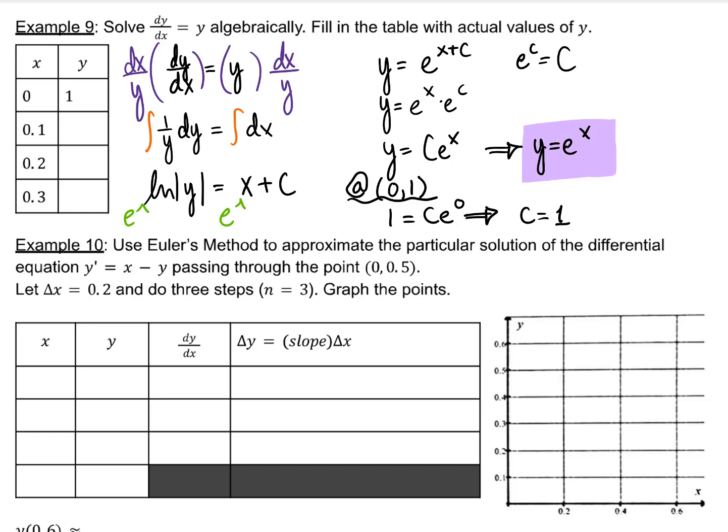Use a calculator to plug in the other values. e^(0.1) is 1.10517. e^(0.2) is 1.2214. And e^(0.3) is 1.34985.